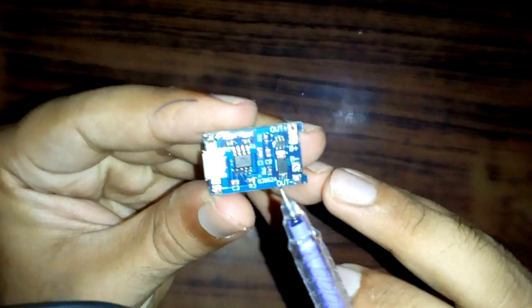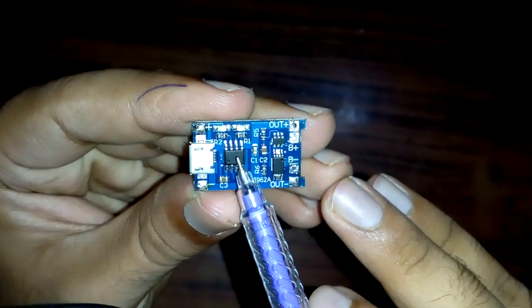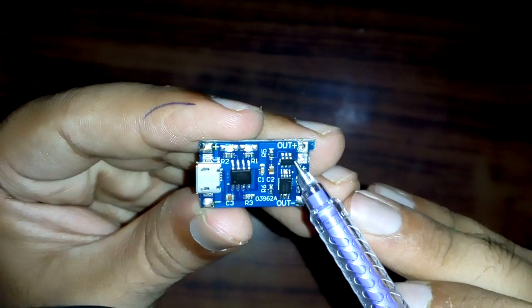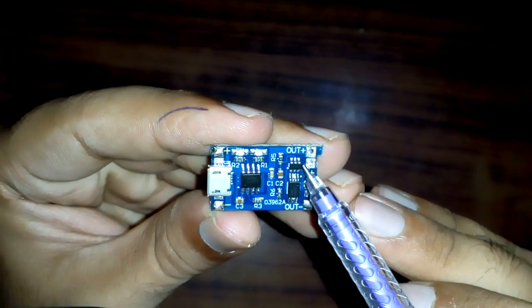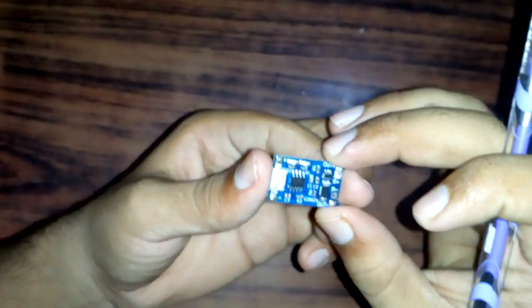As you can see, this module consists of the TP4056 linear charging IC and the DW01 IC, which is the battery protection circuit.